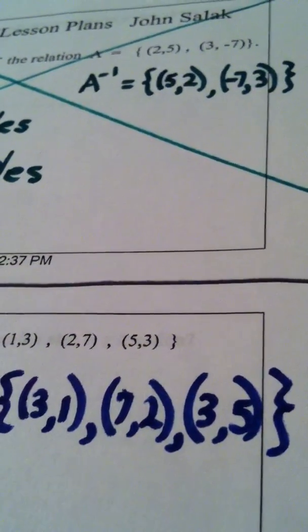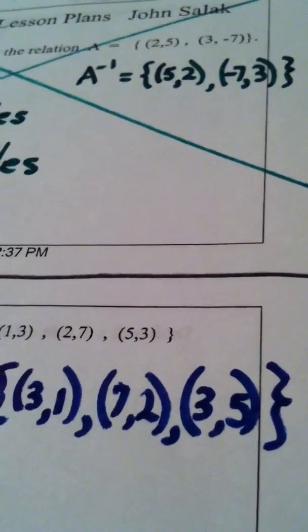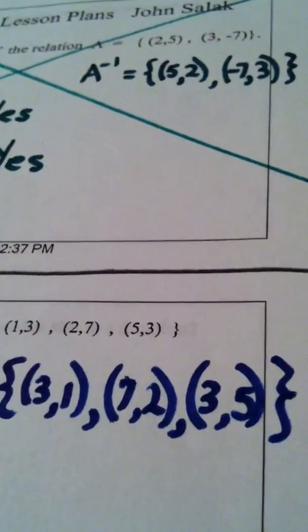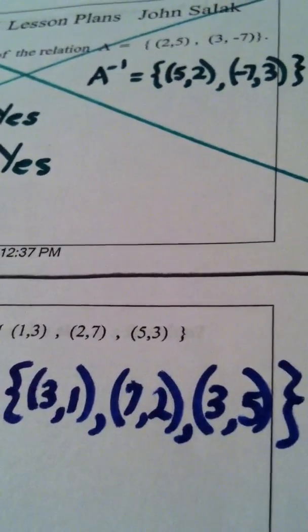That's why the vertical line test is used when you're trying to decide if a graph is a function. If a vertical line crosses a graph more than once, that means that x value has gone out with more than one y value. That can't happen. So, is B inverse a function? No.